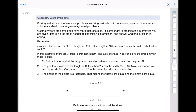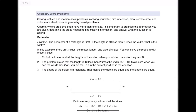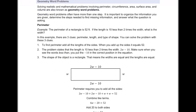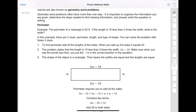Be careful on geometry word problems because there's a lot of terminology involved, and you have to be aware of what they're talking about — especially perimeter, circumference, area, and surface area. Here's one: the perimeter of a rectangle is 52. If the length is 10 less than 2 times the width, what is the width? I look at the problem and pick out what I need to know. They're telling us the perimeter is 52, and it's a rectangle — that's important because we know special properties about rectangles.